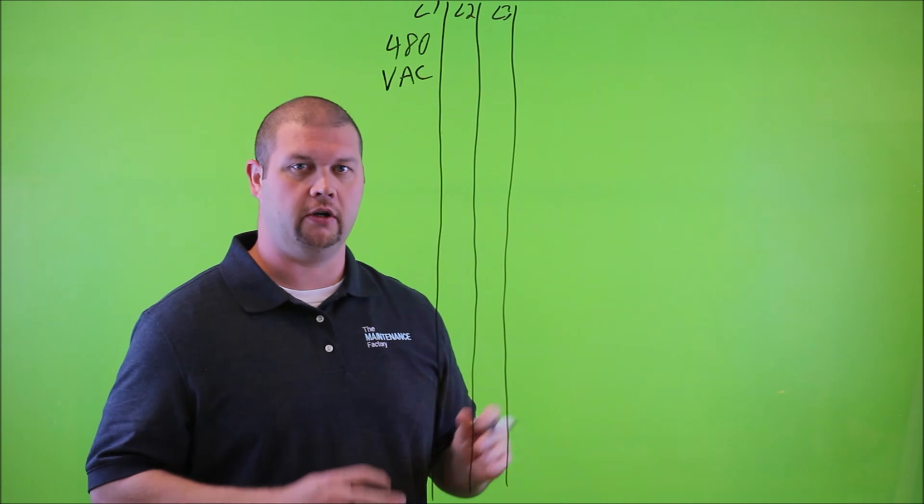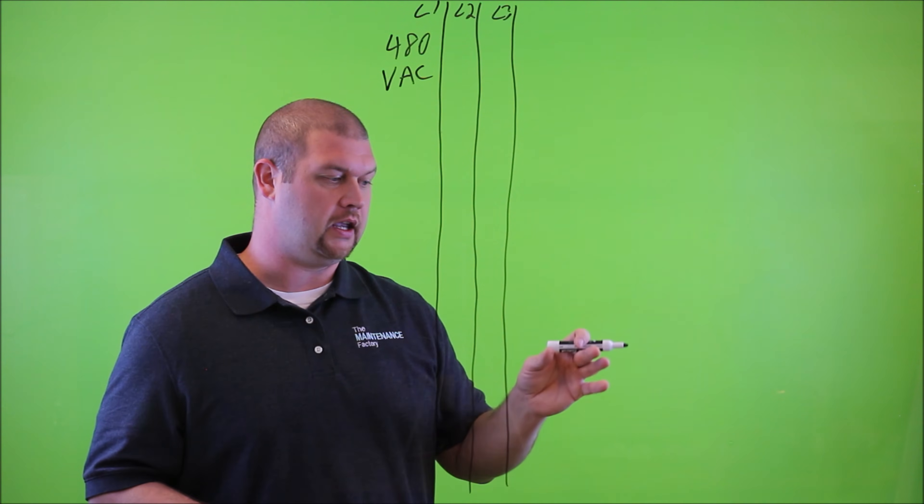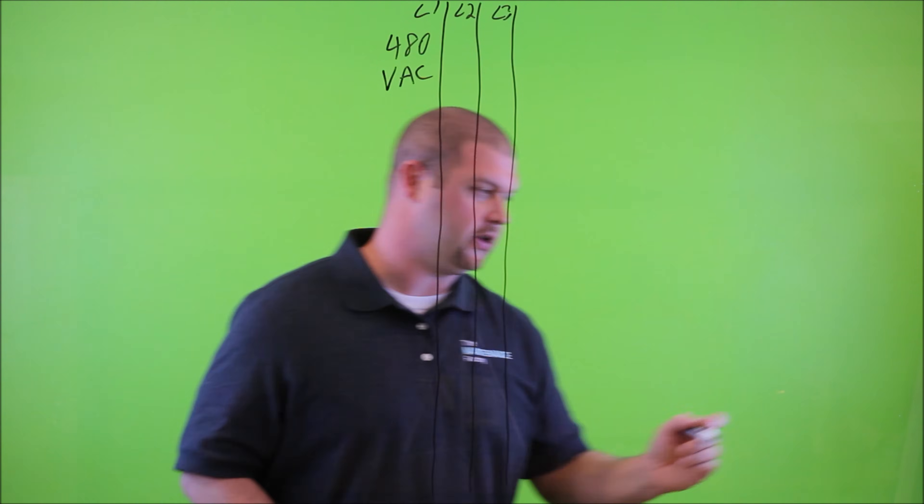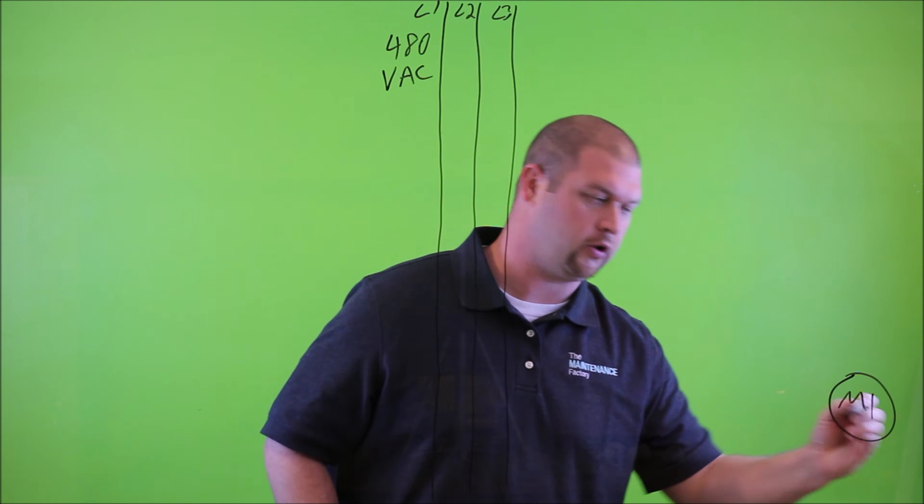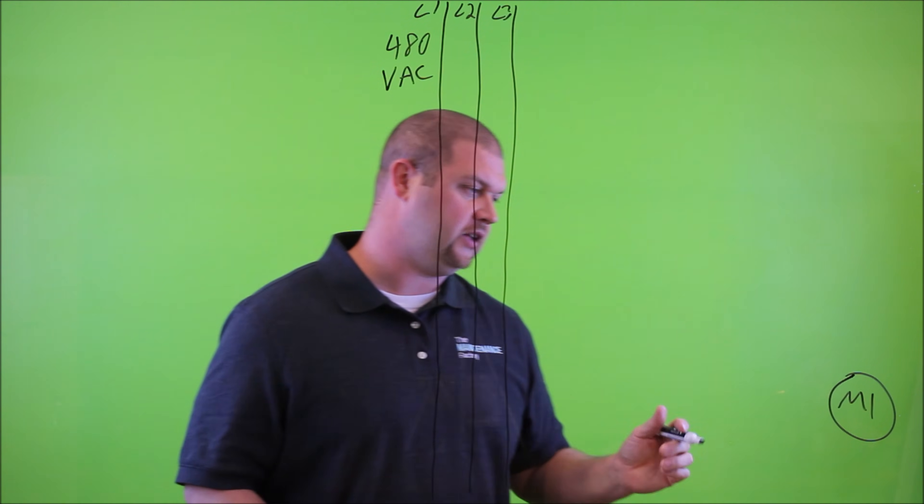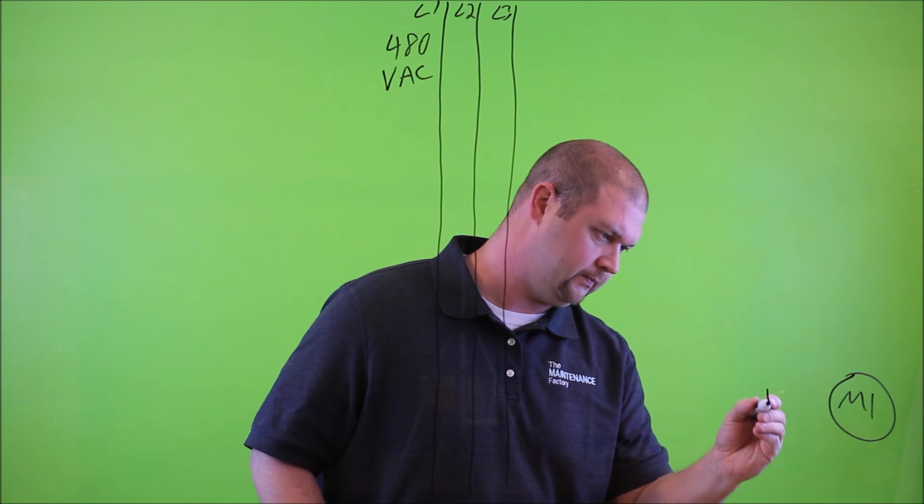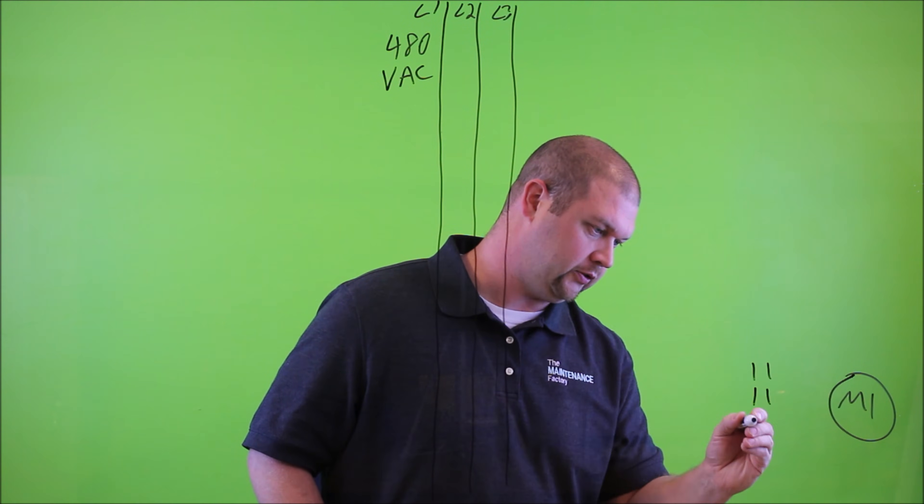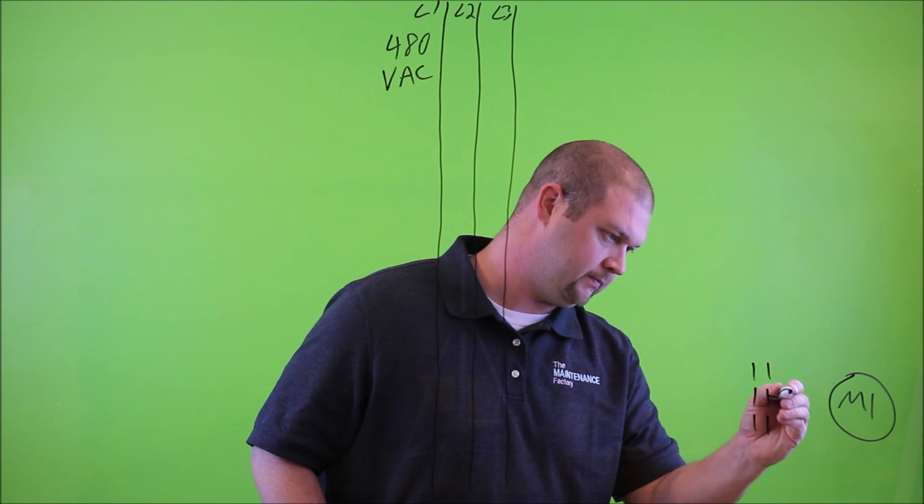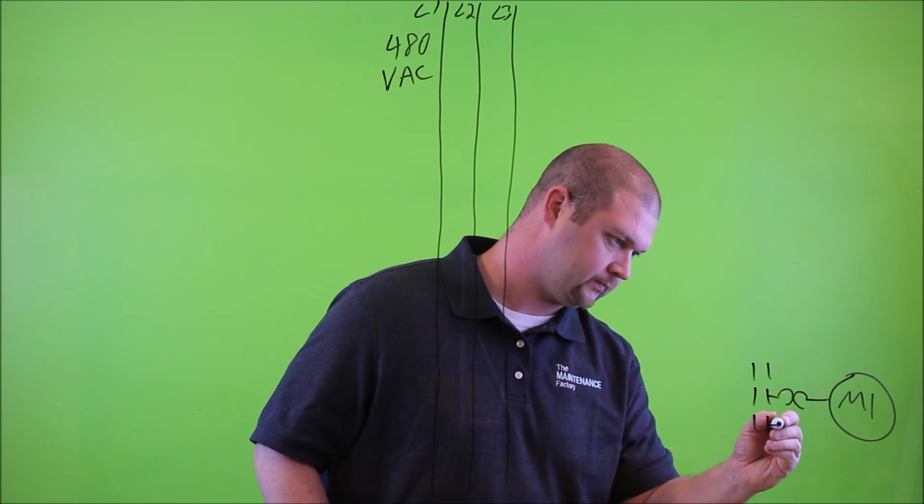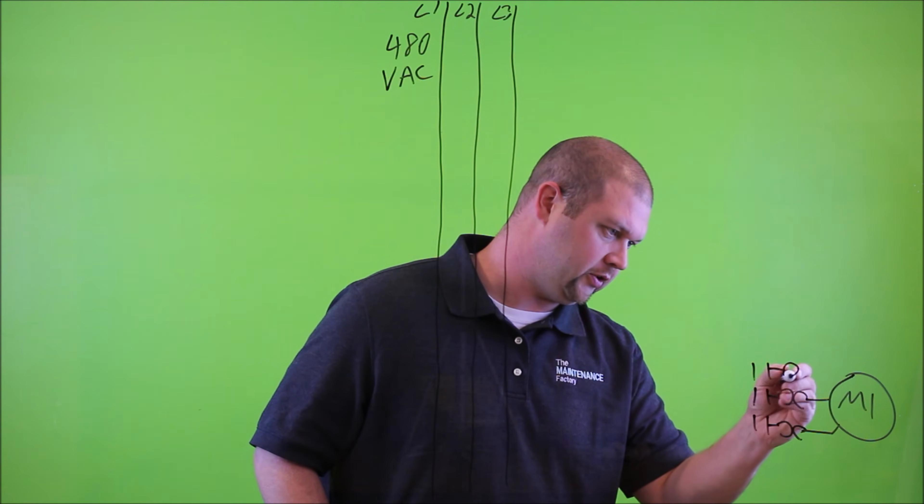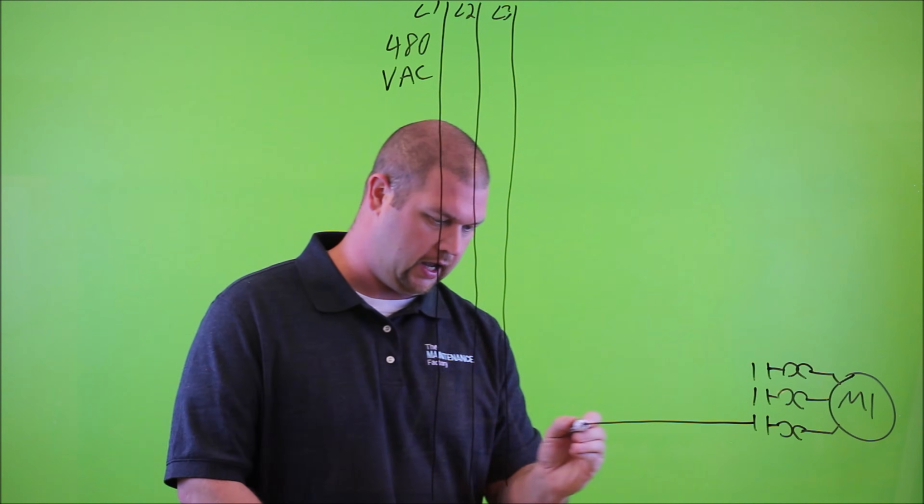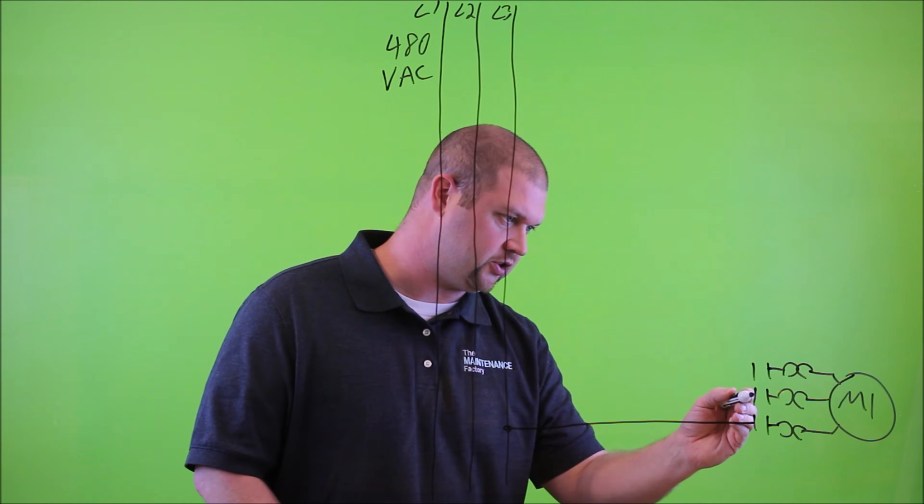And now the next thing we want to do is draw in the motor and the contactor. So let's come over here and draw us a motor, and we're going to label it M1. And then we need to next draw in a contactor. And what I'm going to do is draw the overload portion of the contactor, as well as the line side connections here.